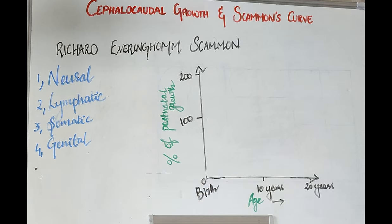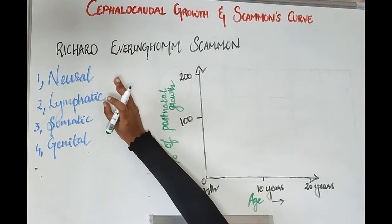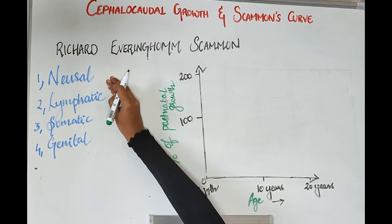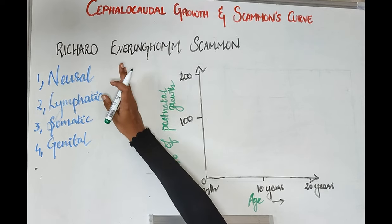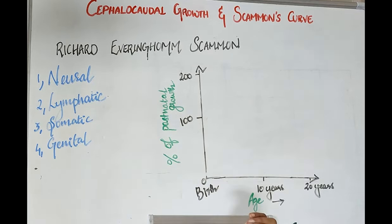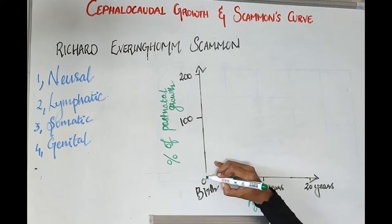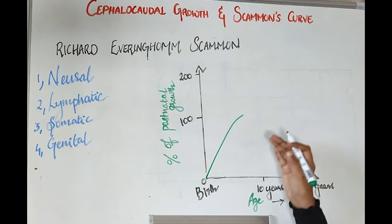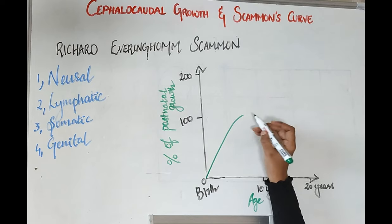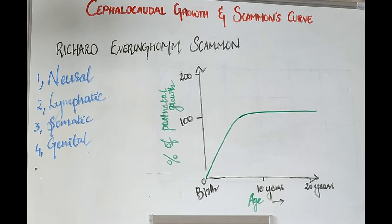First, we will be seeing about neural tissues. Neural tissues are the main components of the central and peripheral nervous system, and their main specialized cells are called neurons. These tissues complete their growth at almost about six to seven years of age. After six to seven years of age, they have no further growth — they will have grown to their maximum size by then.